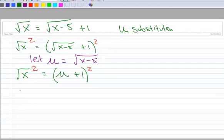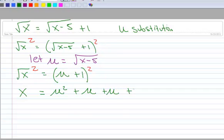When we square the left hand side we get X, when we square or FOIL out the right hand side, we're going to get U squared plus U plus U plus 1.